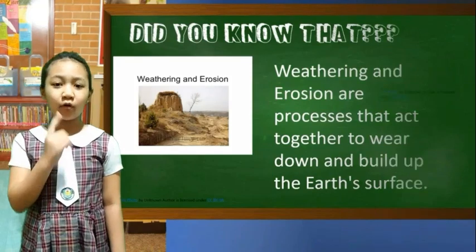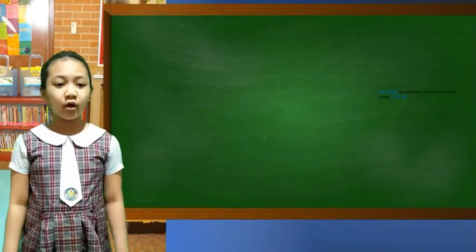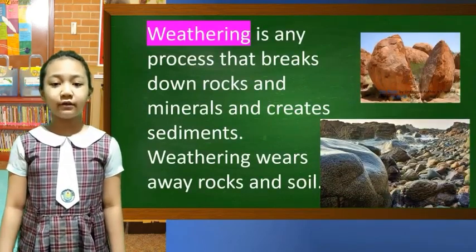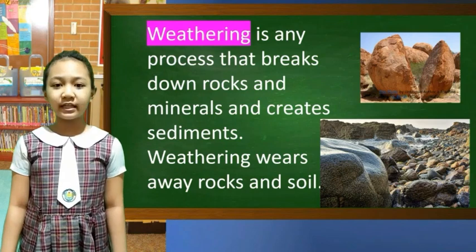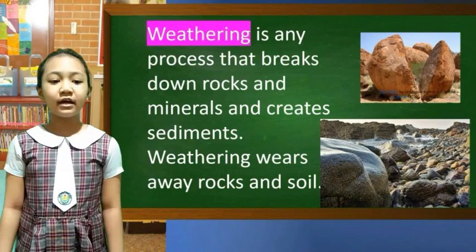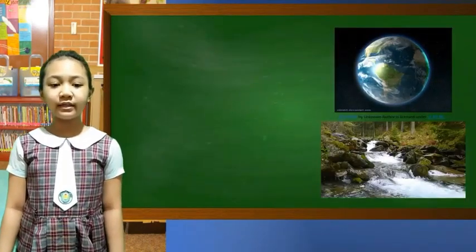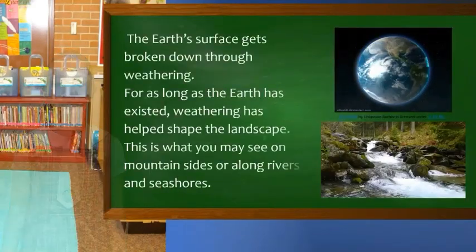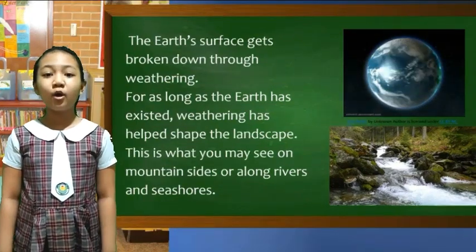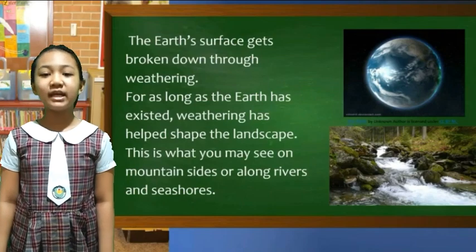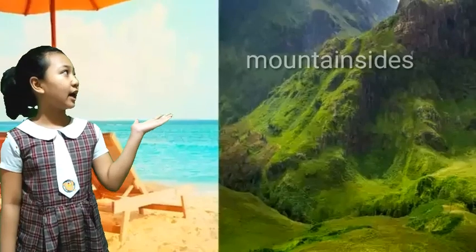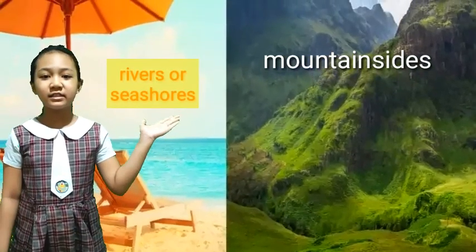What is weathering? Weathering is any process that breaks down rocks and minerals and creates sediments. Weathering wears away rocks and soil, and the Earth's surface gets broken down through weathering. For as long as the Earth has existed, weathering has helped shape the landscape. This is what you may see on mountainsides or along rivers and seashores.